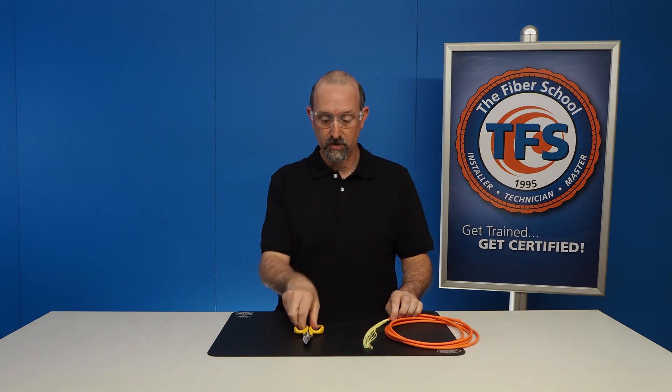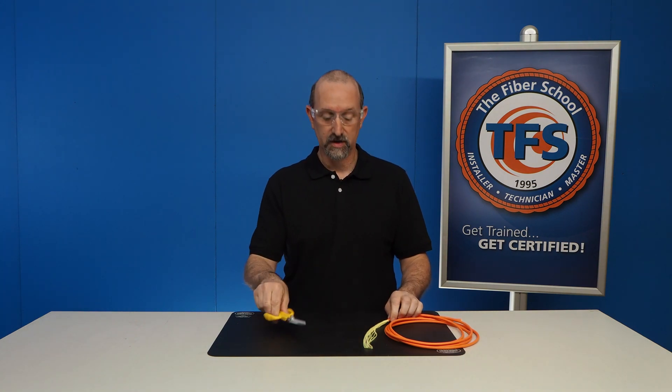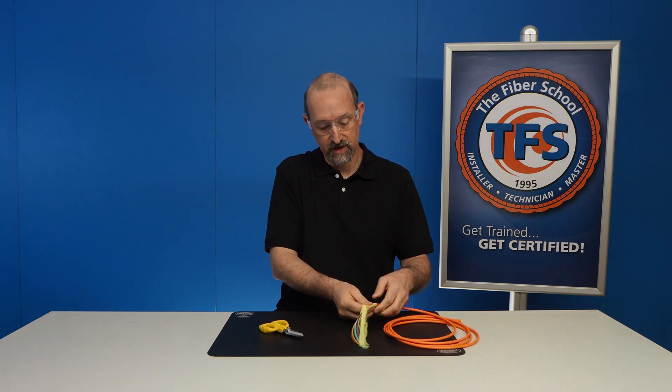Before we get started, I'm going to put on my safety glasses. Safety is very important when it comes to fiber. So we have our shears here. They're very good at cutting this very tough Aramid Strength Member.